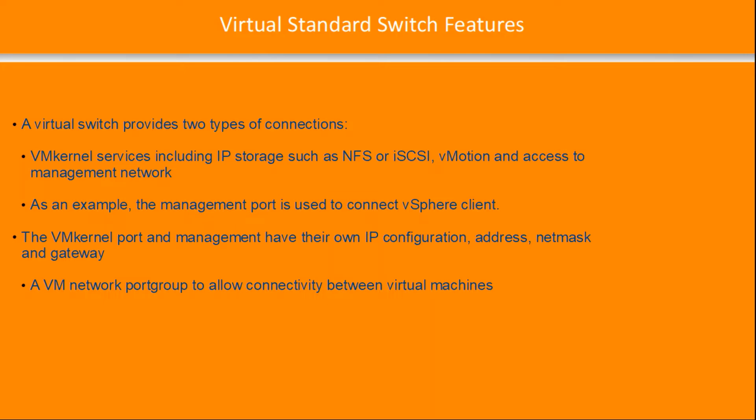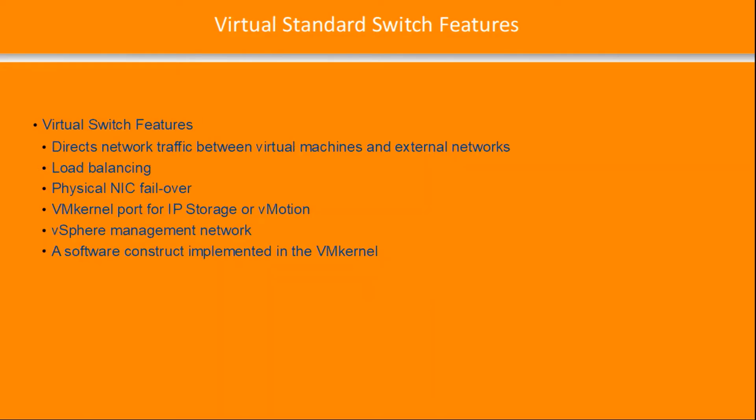The first connection type is a VM kernel, which is a dedicated TCP/IP stack and includes IP storage such as NFS or iSCSI, vMotion, and access to the management network. The management port, as an example, is used to connect the vSphere client. The VM kernel port and management each have their own IP configuration: address, subnet mask, and gateway.